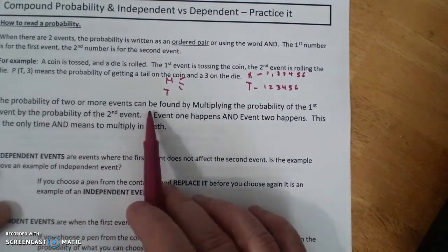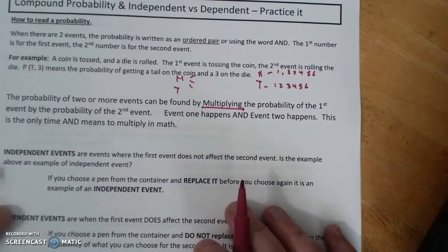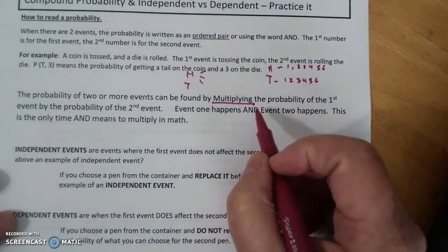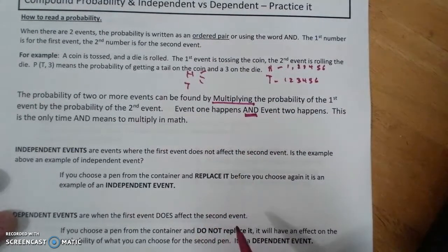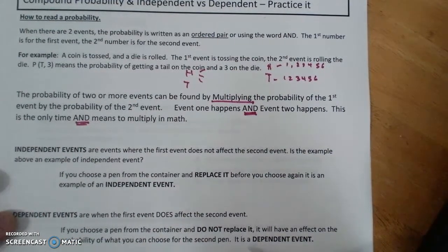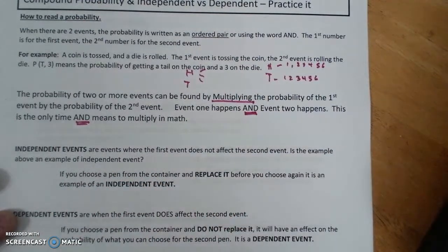The probability of two or more events can be found by multiplying the probability of the first event by the probability of the second event. Event one happens and event two happens. This is the only time and means to multiply. I'll give you an example of where you have heard and before and you didn't multiply.